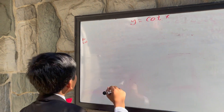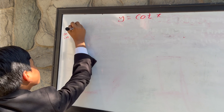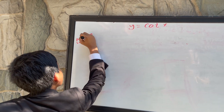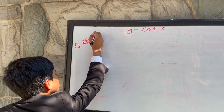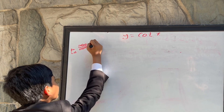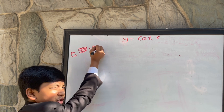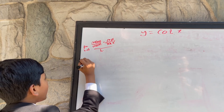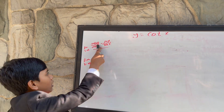Ta-da-da! So we have cosine of (x+h) over sine of (x+h), minus cosine of x over sine of x. And now we have the limit as h approaches 0.